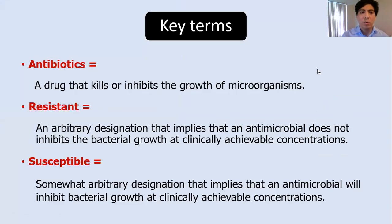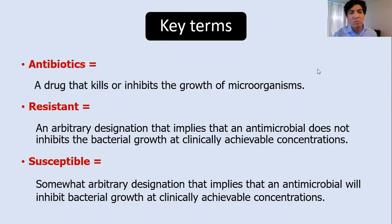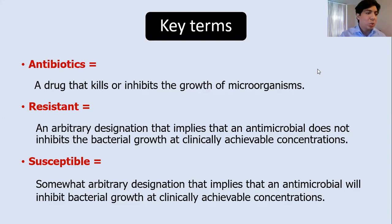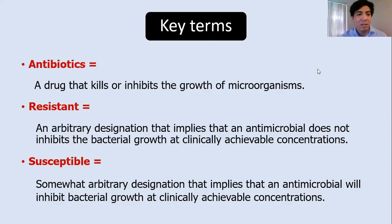An antibiotic is a drug that kills or inhibits the growth of microorganisms. We have two groups: bacteriostatic and bactericidal. Resistance is an arbitrary designation implying that an antimicrobial does not inhibit bacterial growth at clinically achievable concentrations. That second part is critical — a bacterium resistant to vancomycin could theoretically be killed with a gallon of it, but that wouldn't be practical since you'd kill the patient as well. So concentrations must be clinically achievable.